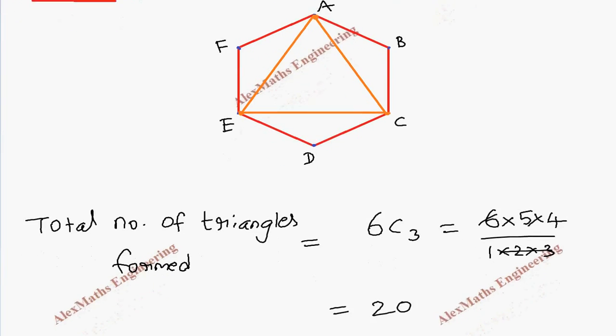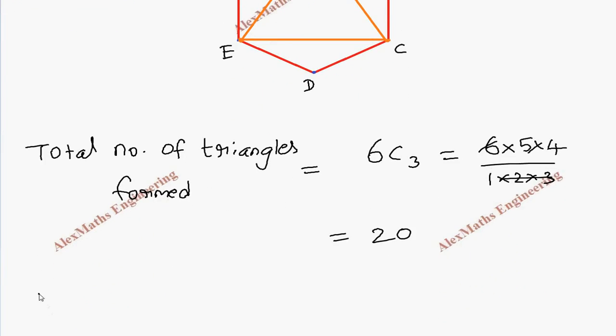So we write it here. Equilateral triangle is formed. One is A, E, C.